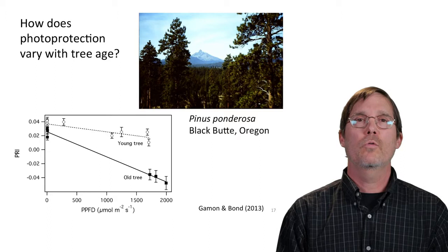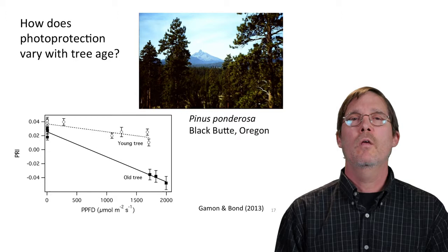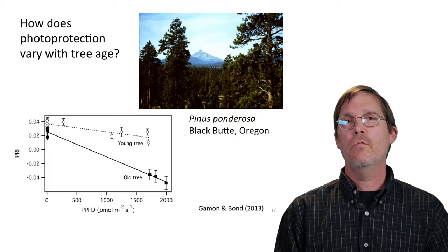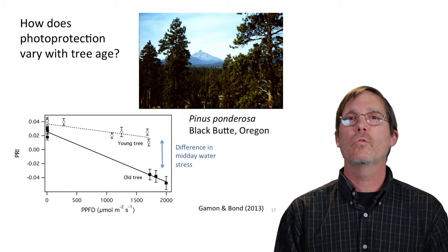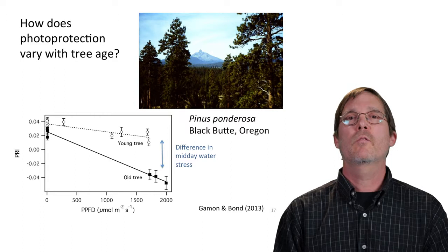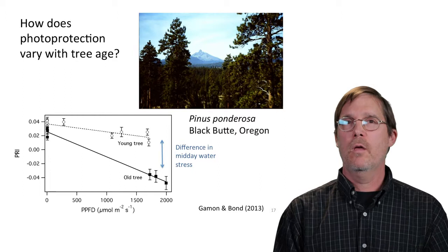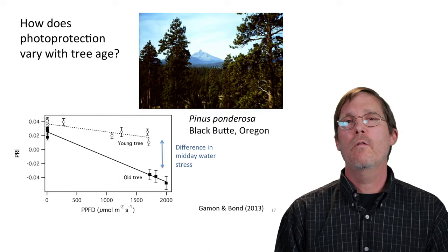This figure shows PRI plotted as a function of PPFD — photosynthetic photon flux density — for a young tree and an old tree. They both start at about the same point in the morning, but as you go to higher light towards midday, the young tree declines a little while the older tree — which has a problem with water supply to the top — shows a much bigger decline in PRI, indicating midday drought stress. This is an example of using a dynamic approach to sampling PRI at the needle scale to pick up differences in physiological behavior between two trees.